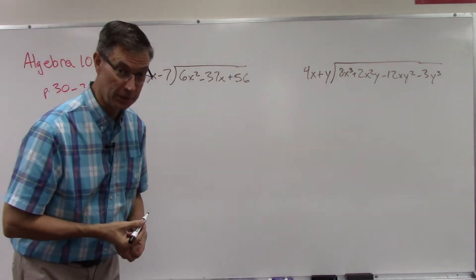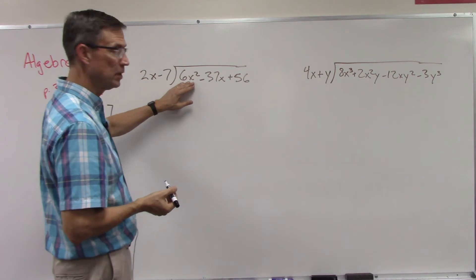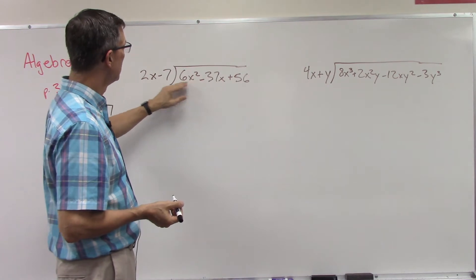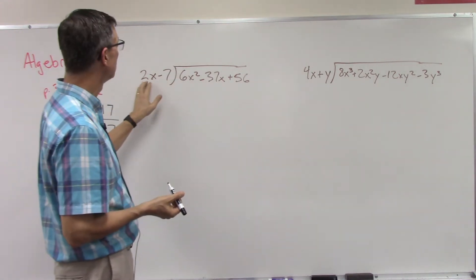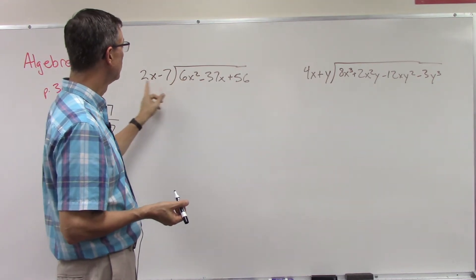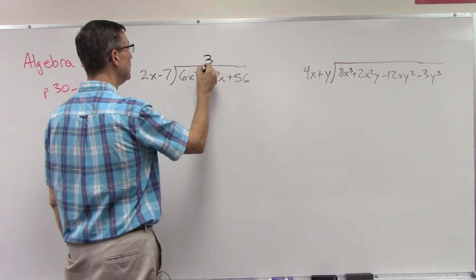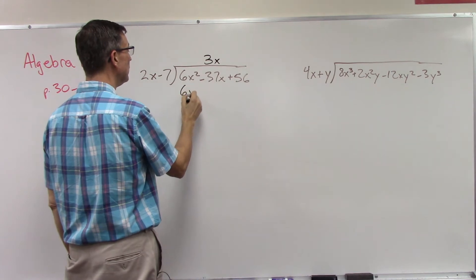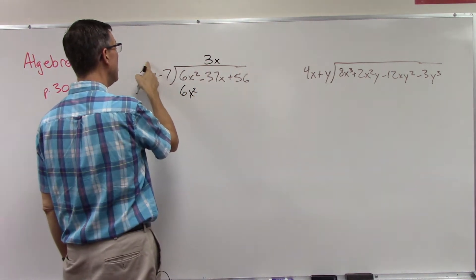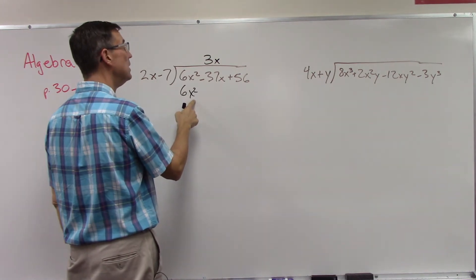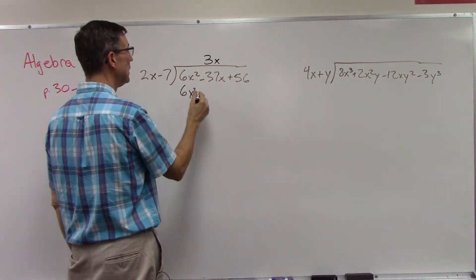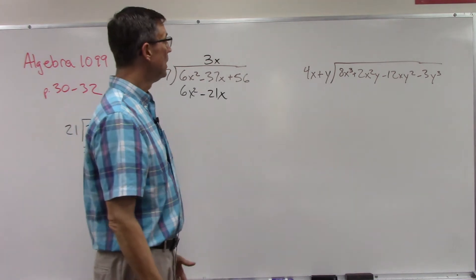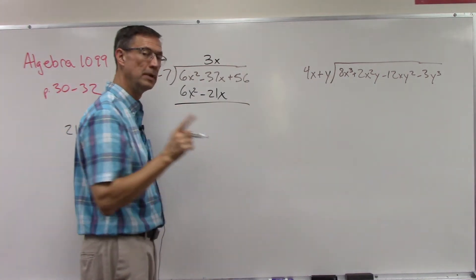We're going to follow a similar process here. Let's just look at the 6x squared, just look at the 2x. Let's divide 6x squared divided by 2x. In other words, what would I multiply times 2x to get 6x squared? Well 2 times 3 would be 6, and then x times x would give me x squared. So if I take 3x times 2x, I'll get 6x squared. Now I need to also multiply the 3x times the negative 7 and I get negative 21x.